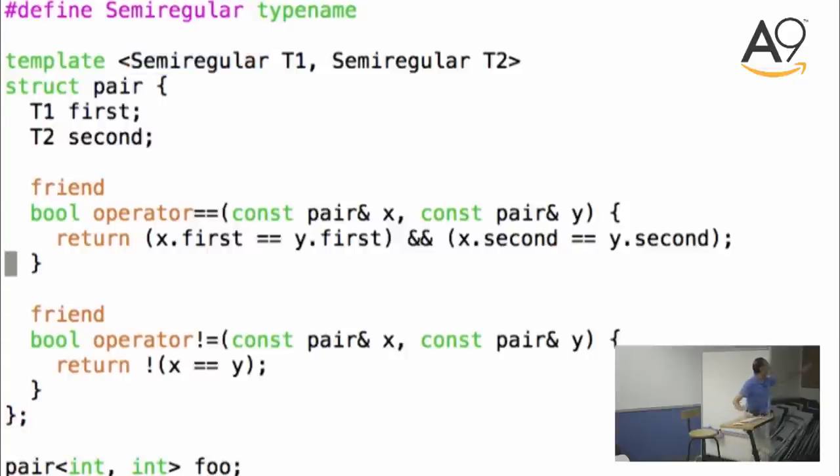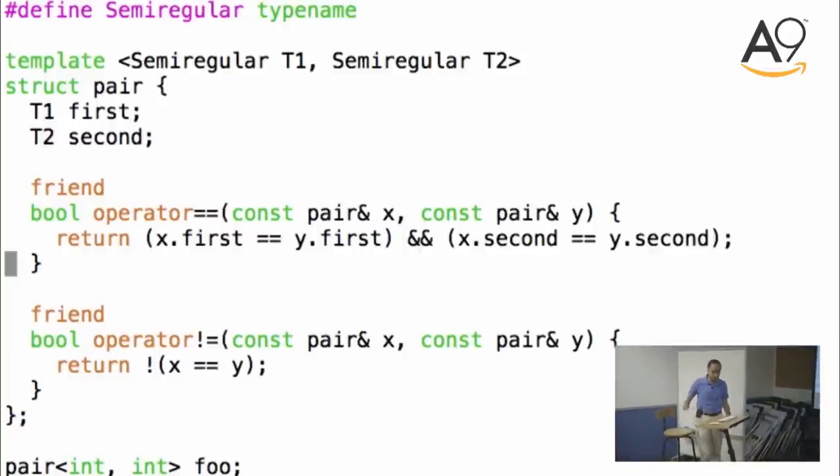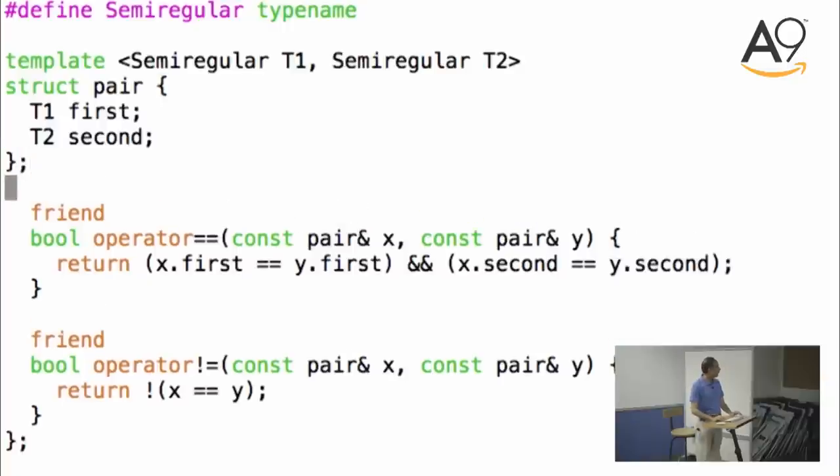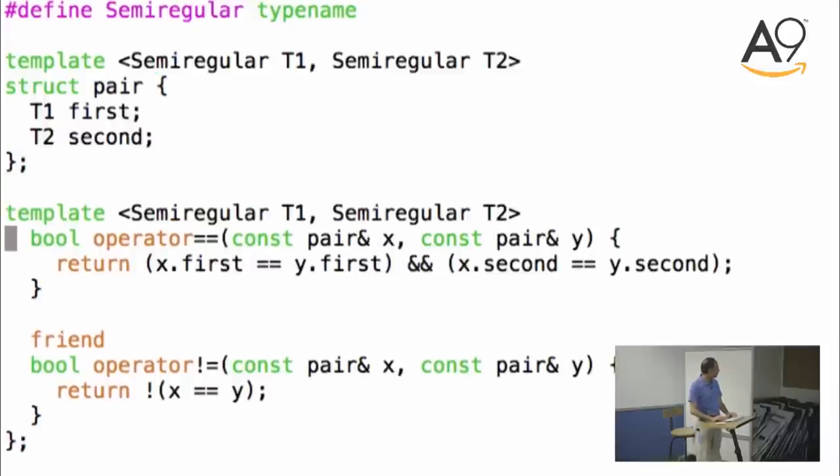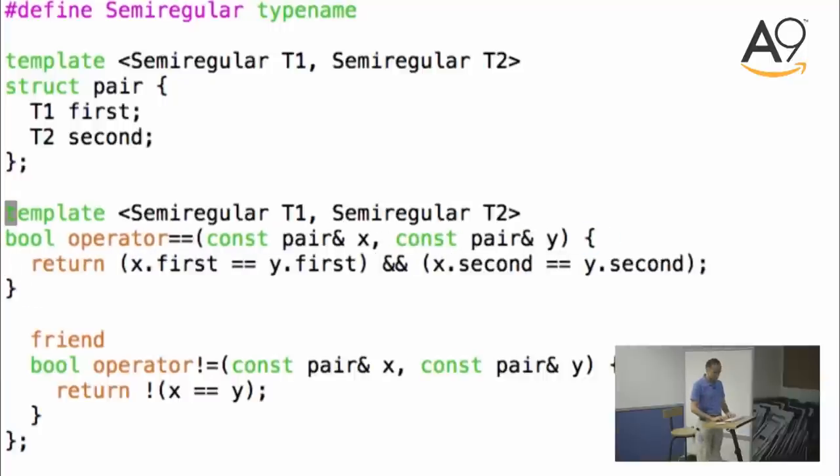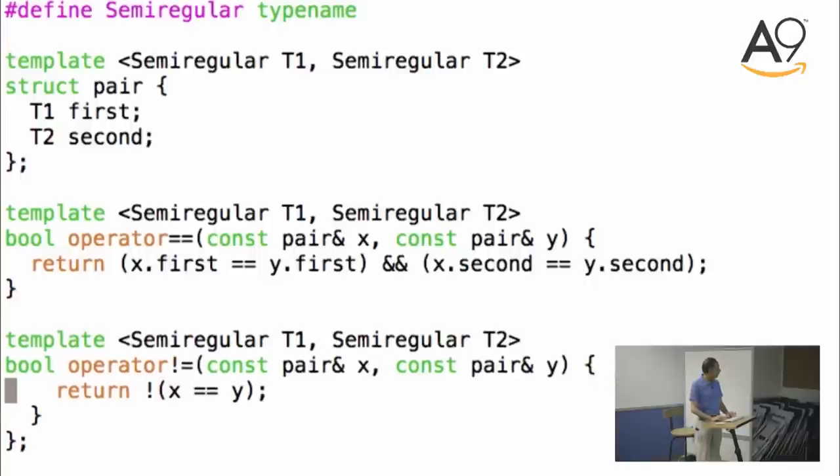What we are defining here, these two functions, these are not members, these are friend functions. And the reason we put them in here is it's just convenient. You don't have to repeat the template line again. But here, since our requirements are different, what we should actually do is complete the pair here, and then define the functions separately. We don't even need them to be friends. I mean, it's all public, so I don't think we need them to be friends.